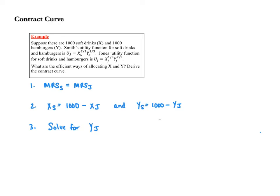Here are the three steps. First, we start by setting Smith's MRS equal to Jones's MRS. That's because the necessary condition for exchange efficiency is that the MRSs need to be equal for all, or here, both individuals.